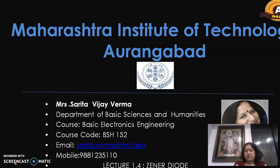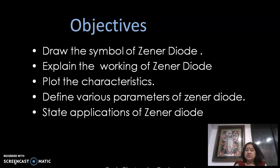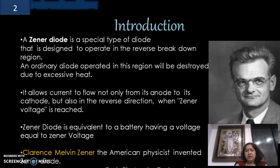This video has been designed with the objective that after watching this video, the viewer should be able to draw the symbol of a zener diode, explain how it works, plot the electrical characteristics, define various parameters, and enlist a few applications. A zener diode is a very special type of diode and it has been designed to operate in the reverse breakdown region.